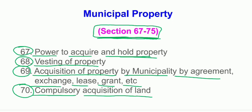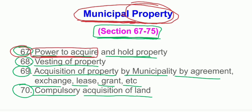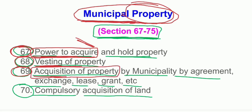Now let's pick up the key terms. First, the topic is Municipal Property, so the word property is important. Section 67 — keyword: power to acquire property. Section 68 — keyword: wasting of property. Section 69 — acquisition of property by municipality by agreement, exchange, lease, grant, etc. Section 69 has already been asked by the examiner in the 2022 examination. Section 70 — compulsory acquisition of land.